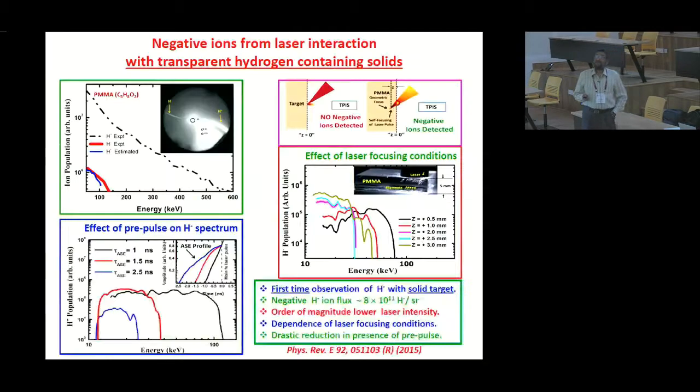Now coming to negative ion acceleration, first time we observed negative ion acceleration also in transparent material. So, here we have used simple PMMA, that is acrylic transparent material and if you focus the laser beam in PMMA, then you get negative ion acceleration in the case only when the pre-pulse is very low, that is at one nanosecond pre-pulse, you can see the higher H minus population. As you increase the pre-pulse level, this decreases sharply. Similarly, we observed that ion acceleration is observed in case of beam is focused deep into the target. Like see this is suppose it is focused at the surface of the PMMA, then there is no negative ion observation. But if beam is focused deep into the PMMA, then we get negative ion acceleration.